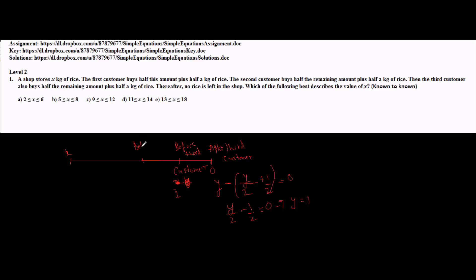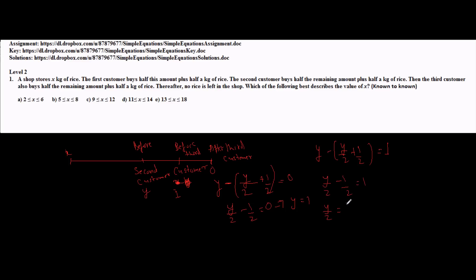Similarly I can calculate before the second customer. Again assuming this is Y: Y minus (Y/2 plus 1/2) equals 1. This implies Y/2 minus 1/2 equals 1, or Y/2 equals 3/2, which implies Y equals 3. So we have 0 after the third customer, 1 before the third customer, and 3 before the second customer.